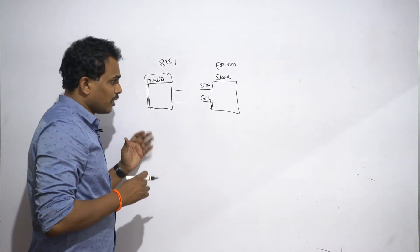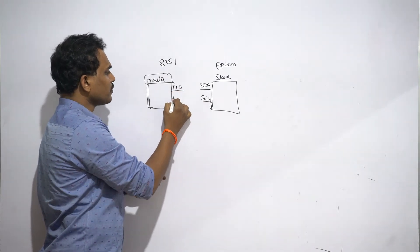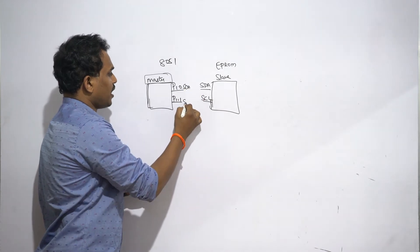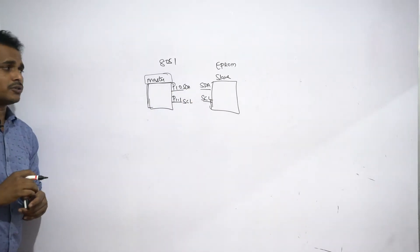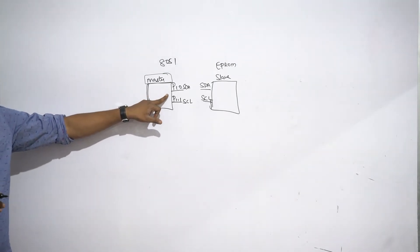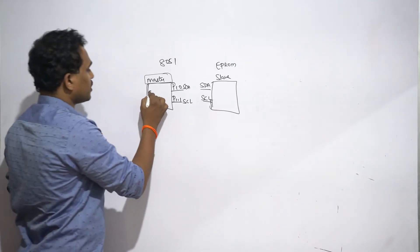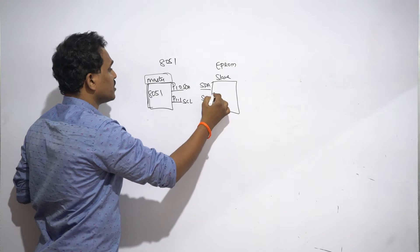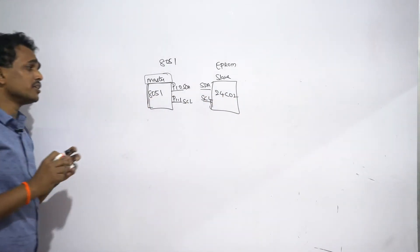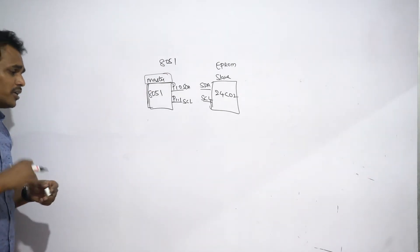So I am taking general IO lines and making one line as SDA and one line as SCL. As a master, the 8051 has three responsibilities: it has to initiate the communication, generate clock cycles, and terminate the communication.